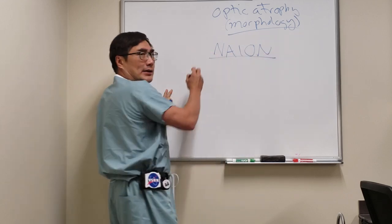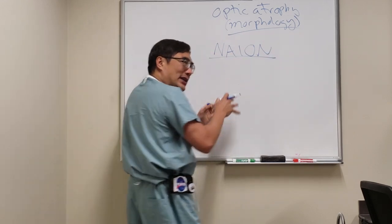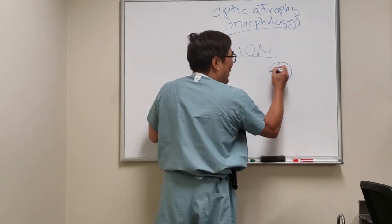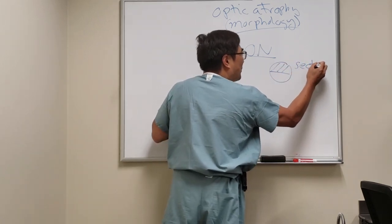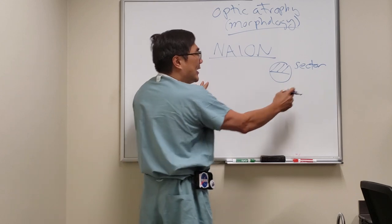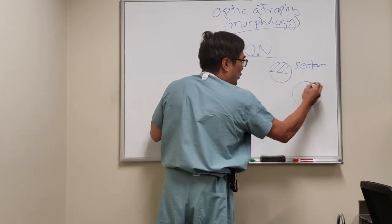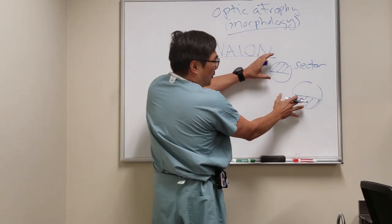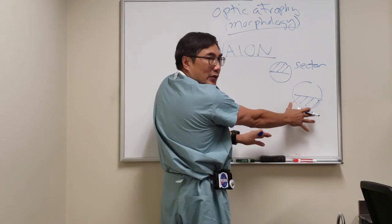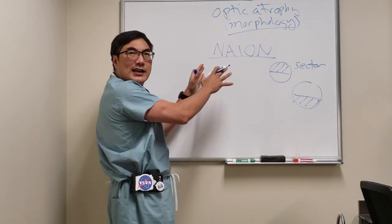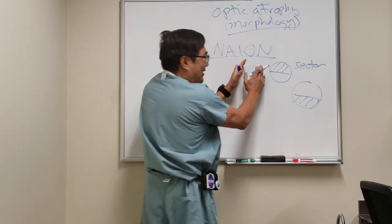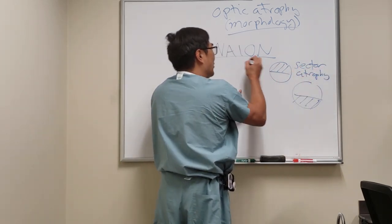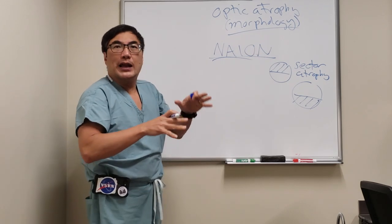For non-arteritic anterior ischemic optic neuropathy (NAION), that normally is a vascular problem, and so we can see sector pallor. If it's just the top of the disc that's affected, you would have a corresponding field defect — an inferior altitudinal. So the corresponding sector pallor with the field, in the right vascular neuropathic patient who had sector edema that became sector atrophy, is a clue that the atrophy was from NAION.